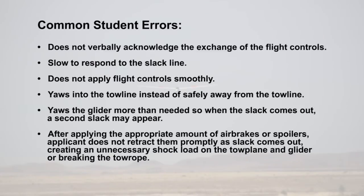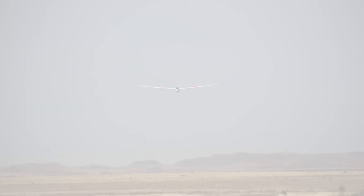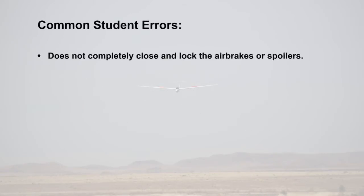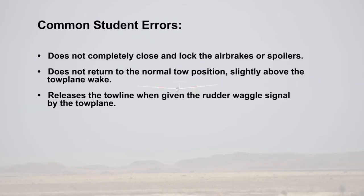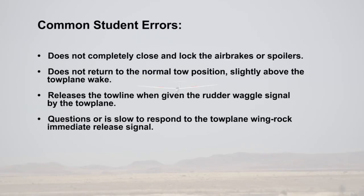After applying the appropriate amount of air brakes or spoilers, the applicant does not retract them promptly as slack comes out, creating an unnecessary shock load on the tow plane and glider, or possibly breaking the tow rope. Does not completely close and lock the air brakes or spoilers. Does not return to the normal tow position slightly above the tow plane wake. Does not return to the tow plane when given the rudder waggle signal, or is slow to respond to the tow plane wing rock immediate release signal.